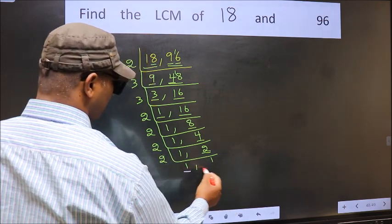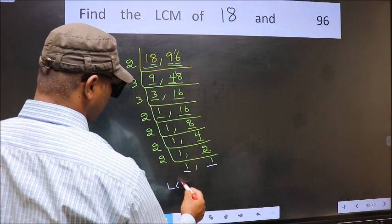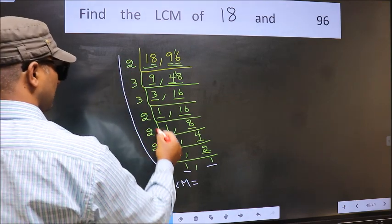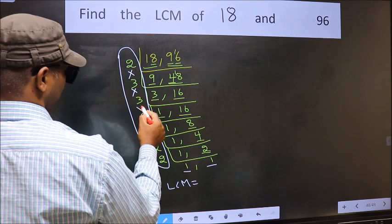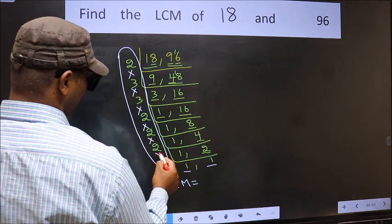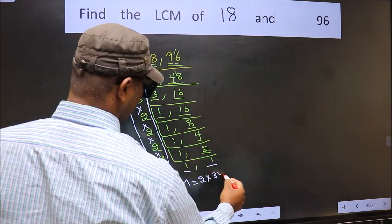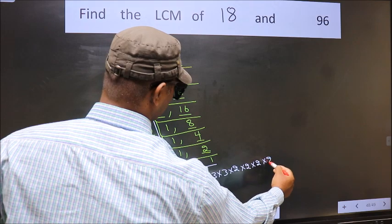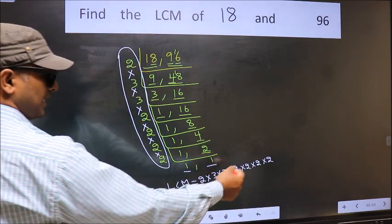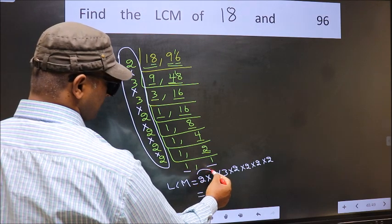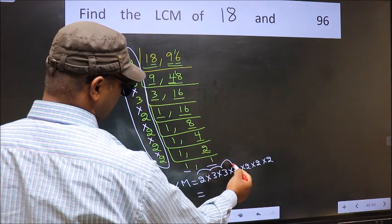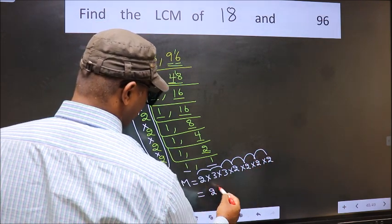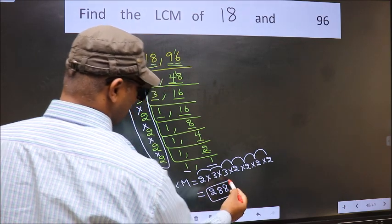We now have 1 in both places. So our LCM is the product of all these divisors: 2 × 3 × 3 × 3 × 2 × 2 × 2 × 2. Multiplying: 2 × 3 = 6, × 3 = 18, × 2 = 36, × 2 = 72, × 2 = 144, × 2 = 288. So the LCM of 18 and 96 is 288.